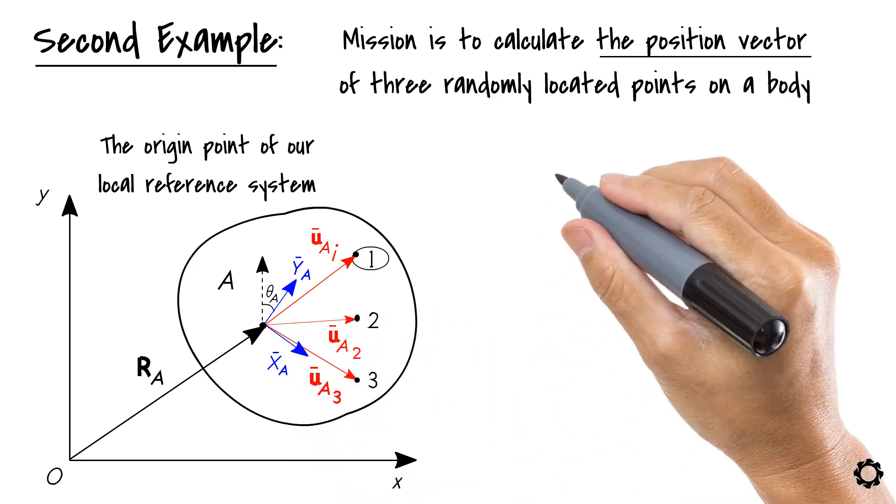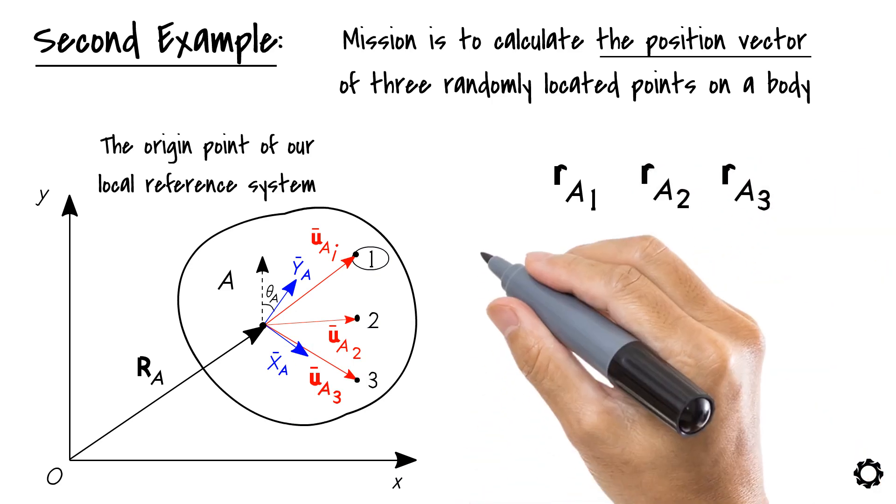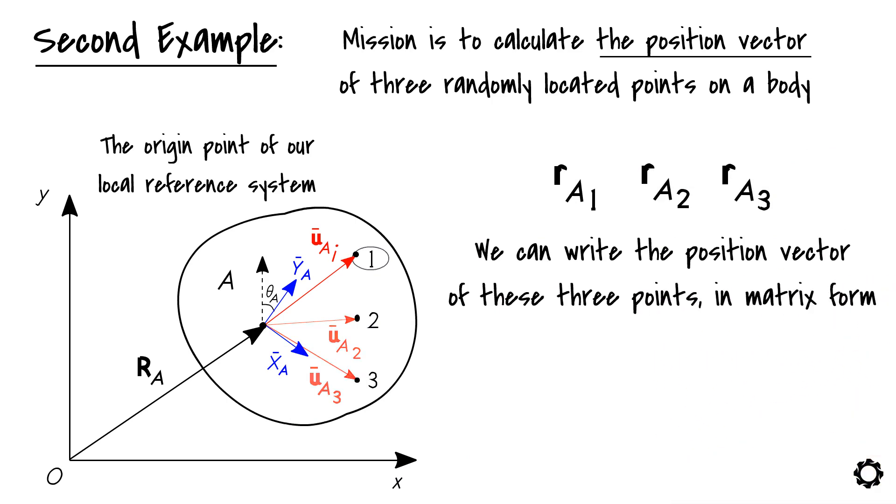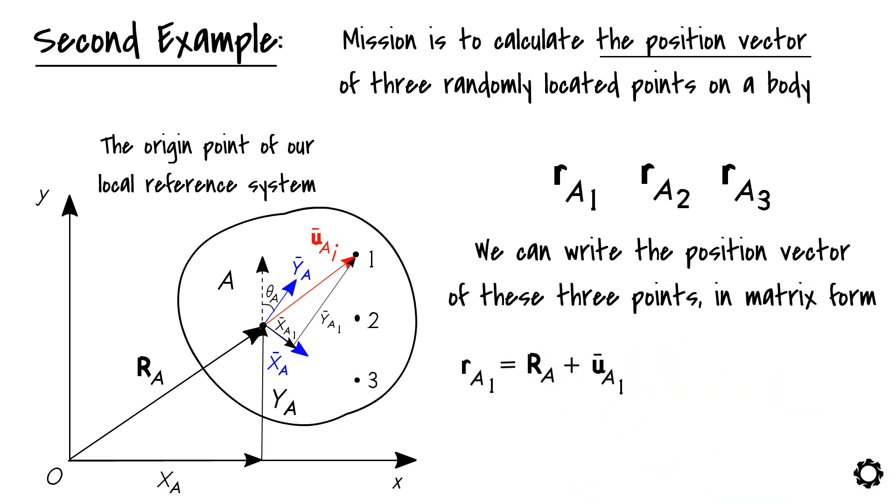Let's draw this for the remaining two particles also. Now we get the position vectors R A1, R A2, and R A3. If we want, we can write the position vector of these three points in matrix form. Let's take point 1 for example. R A1 equals R A plus U bar A1 equals X A Y A plus X bar A1 Y bar A1.